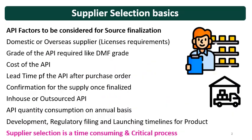First of all, we will see what are the factors required to be considered for source finalization. For example, you have been given a product for development and now you have to purchase the materials, including the API or Drug Substance, then raw materials and the change parts for the machine. Consider a generic product — you will do the literature search and from that, you will identify the API and its properties, like chemical structure, polymorphic form if any, and the patents if any.